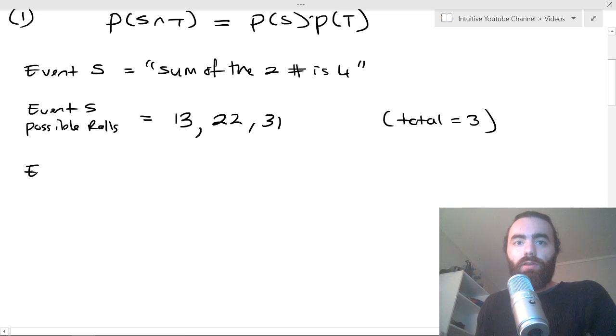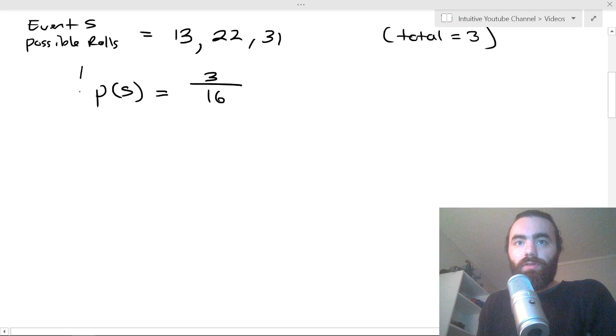And then let's look at finding the probability. Remember we've got to find all these individually. So the probability of S then is the total, which is three, total ways that event S can occur divided by the total actual rolls that we can do. So that's 3 over 16.